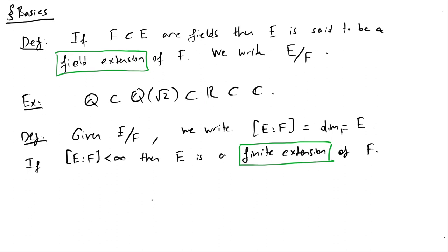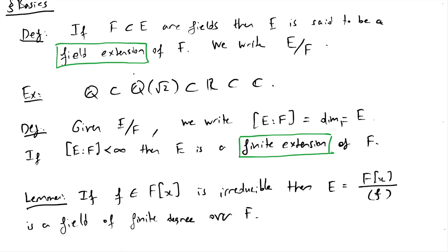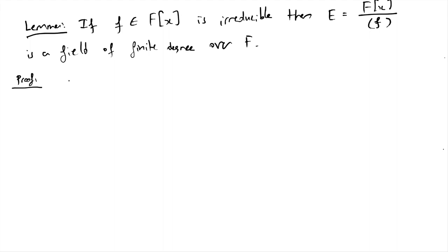Let's attack our problem of interest directly. If I take an irreducible polynomial f — here there's little f and capital F — so little f inside the polynomial ring with coefficients in capital F is irreducible, then the quotient E = F[x]/(f) is a field and has finite degree over F. This is also called the degree of the extension. We claim that the dimension of E as an F-vector space is finite and in fact equals the degree of the polynomial f, which I denote d.